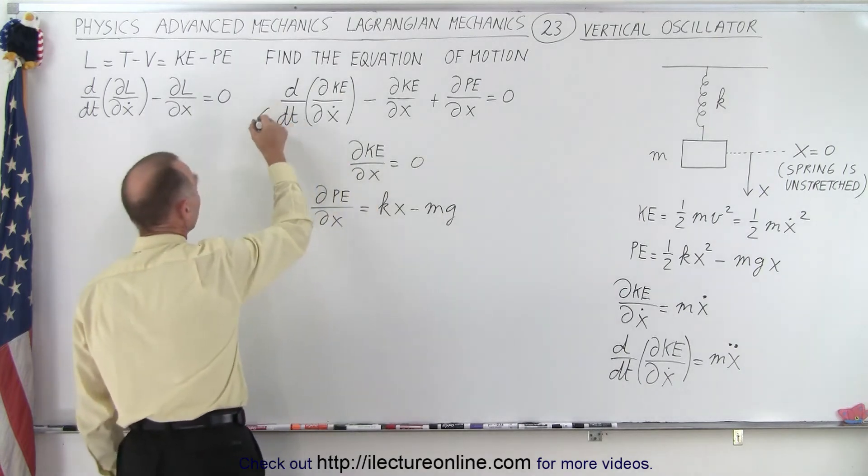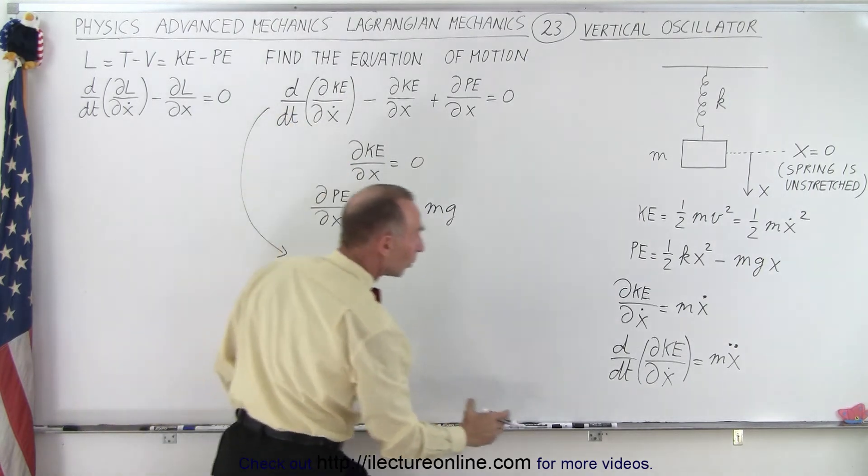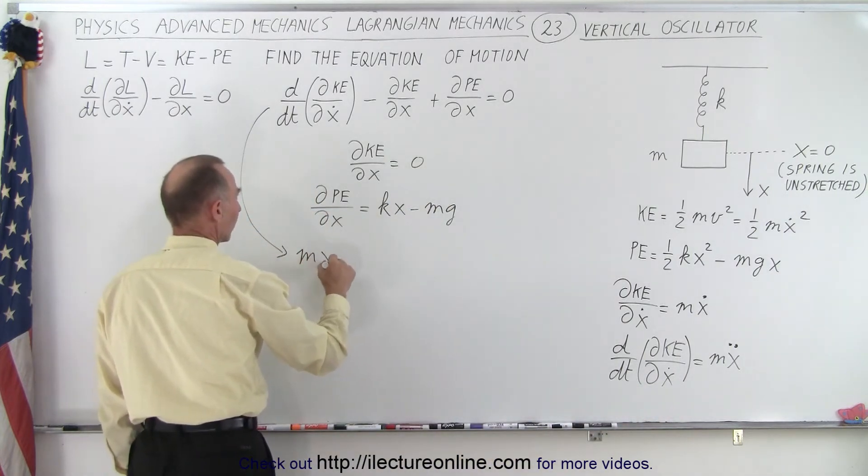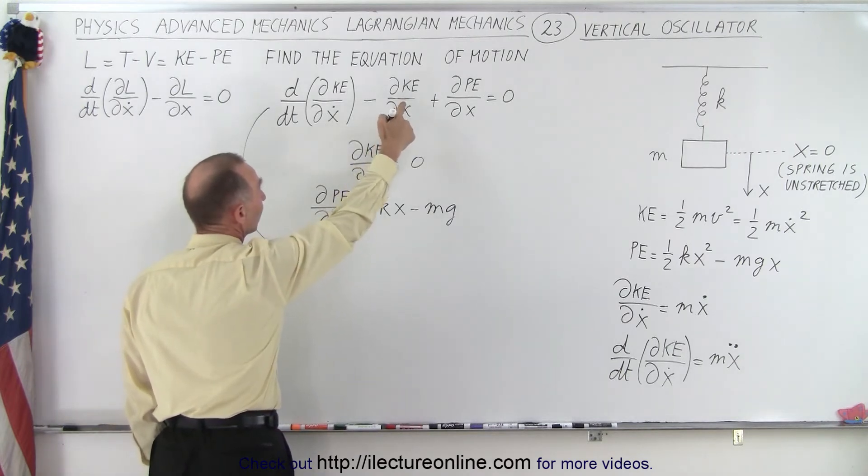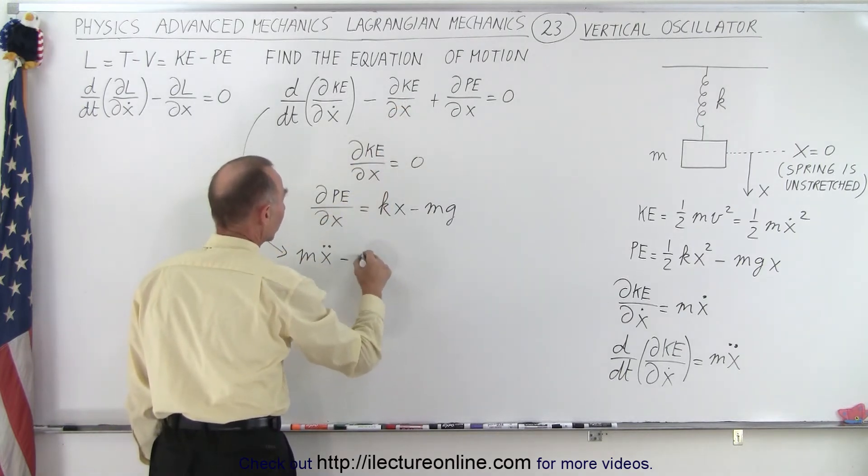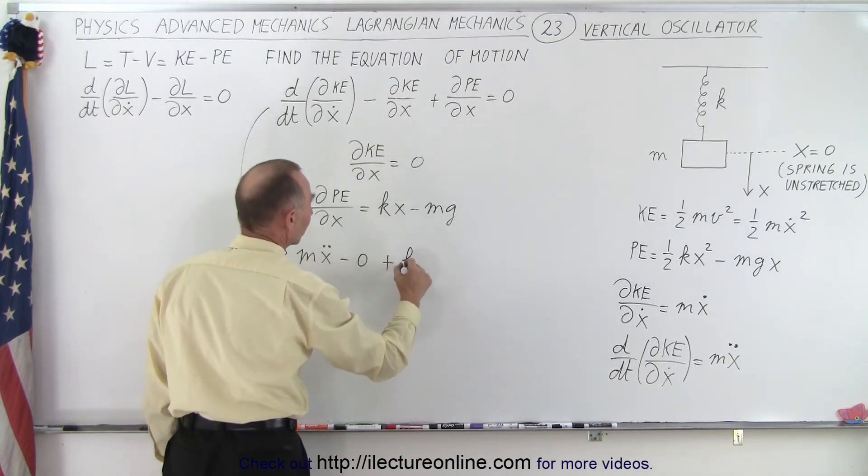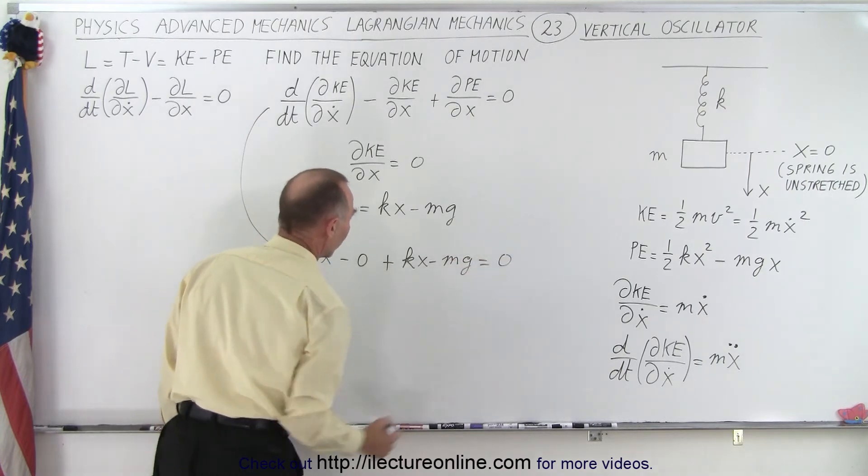Now we're ready to plug that into this equation. So this is the first part, which is m x double dot, minus the partial derivative of kinetic energy with respect to x, which is minus zero. And then plus this part, which is kx minus mg, and that equals zero.